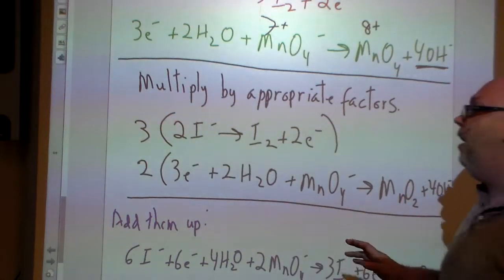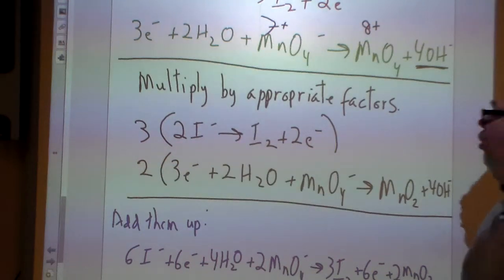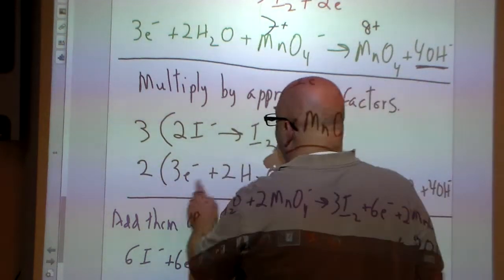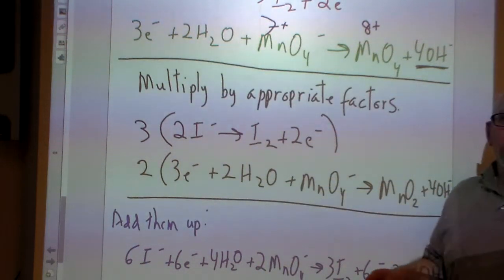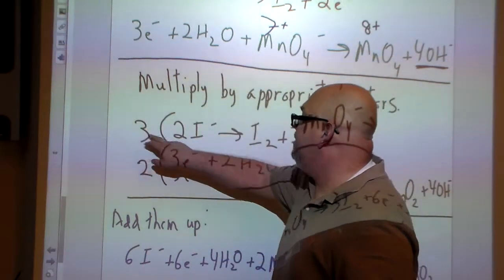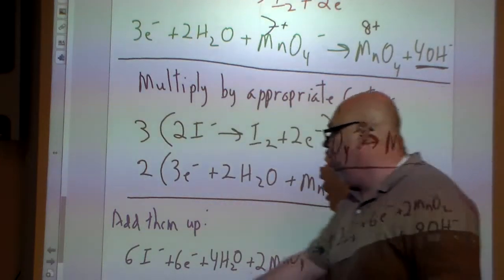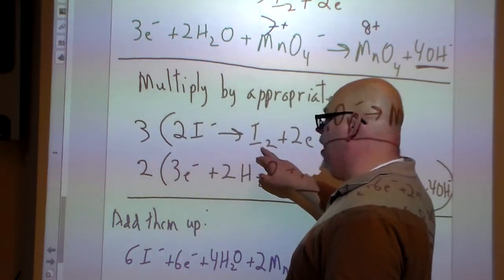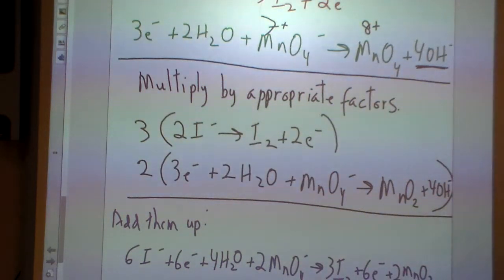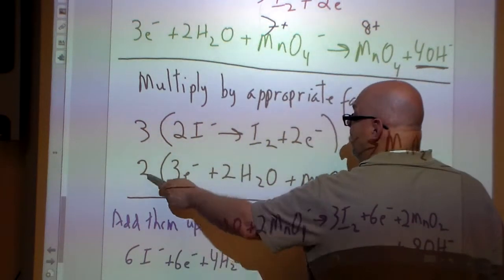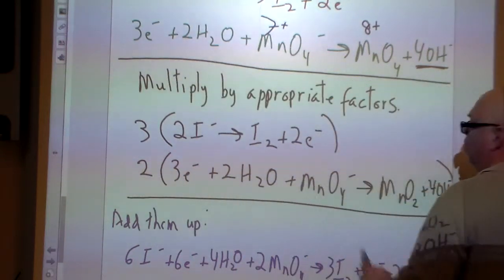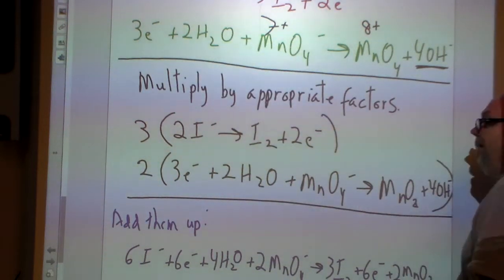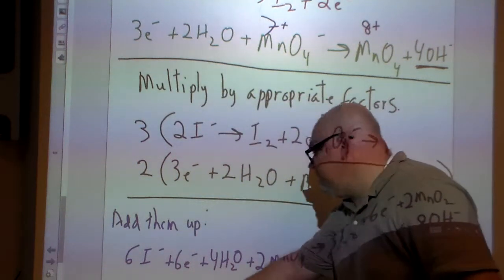Now we've got the charges figured out. Now we've got to multiply by the appropriate factors. We want to make the electrons equal to each other on both sides of the arrow. Here we have two electrons, over here we have three electrons. So what numbers do two and three go into? Six. So we're going to multiply this side by three, this side by two, and then we're going to multiply this all out.